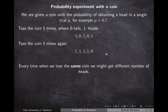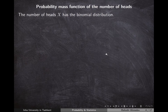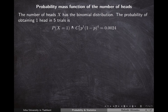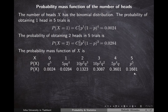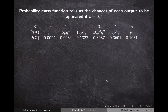Every time we toss the same coin, we might get a different number of heads. The number of heads follows the binomial distribution, and we can calculate the probability of obtaining one head, two heads, etc. in five trials before starting the experiment. Using the binomial distribution formula with p=0.7 and q=0.3, we build a table — this is the probability mass function, which tells us the probability of obtaining each output for our random variable before the experiment begins.